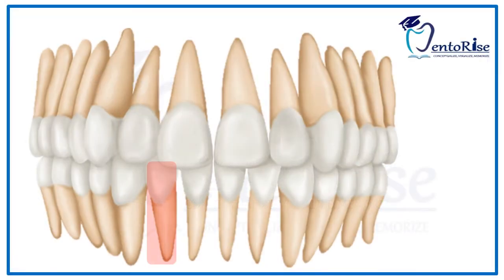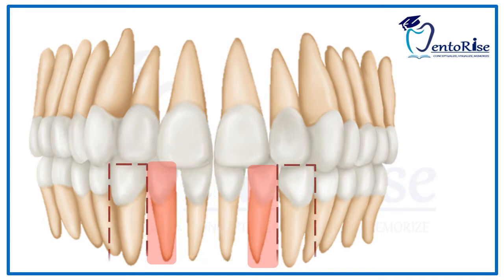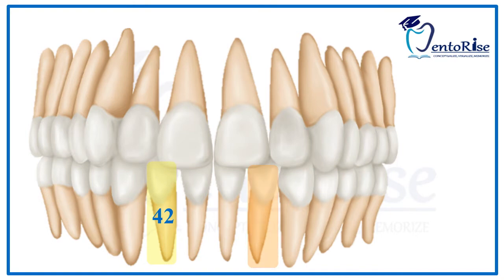The right and the left mandibular lateral incisors, which are also called the second incisors, are present in contact with the central incisor mesially and with the canines distally. According to the FDI tooth notation system, the permanent right mandibular lateral incisor is numbered as 42 and the permanent left mandibular lateral incisor is numbered as 32.